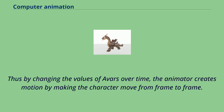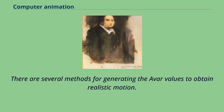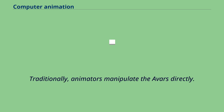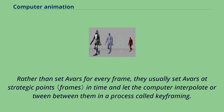There are several methods for generating the AVAR values to obtain realistic motion. Traditionally, animators manipulate the AVARs directly. Rather than set AVARs for every frame, they usually set AVARs at strategic points in time and let the computer interpolate or tween between them in a process called keyframing.